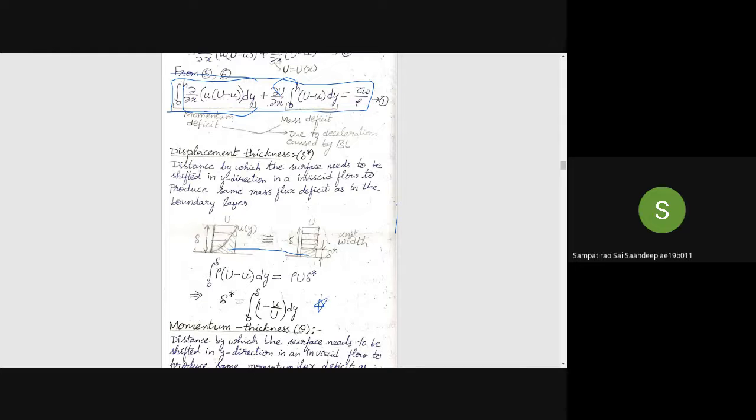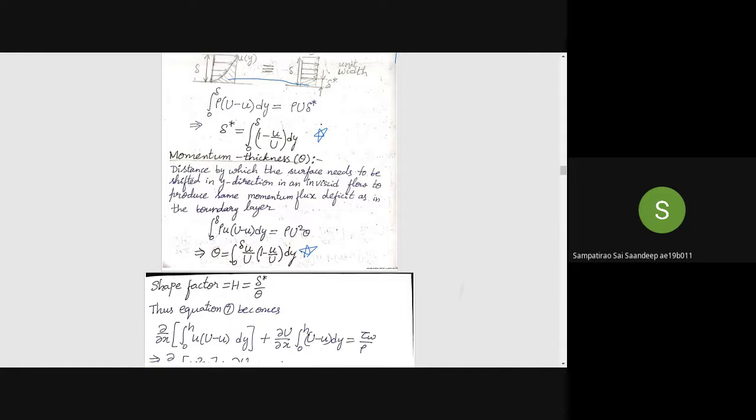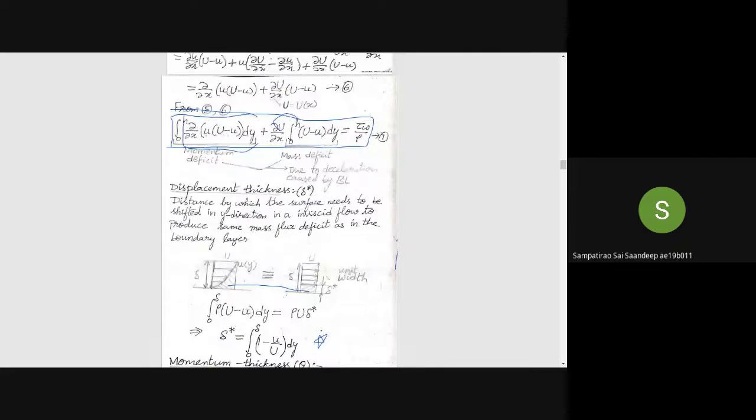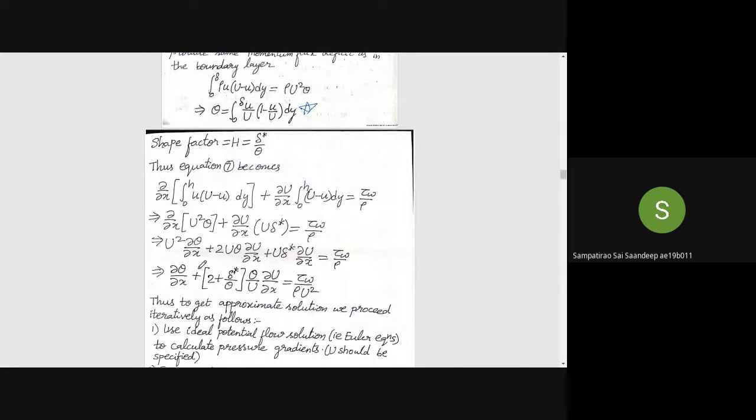Similarly we define momentum thickness as distance by which the surface needs to be shifted in y direction to produce the same momentum flux deficit. I define shape factor h as delta star by theta. So finally this equation becomes dθ/dx + (2 + δ*/θ)(θ/U)(dU/dx) = τ_w/(ρU²). This is also one important equation.